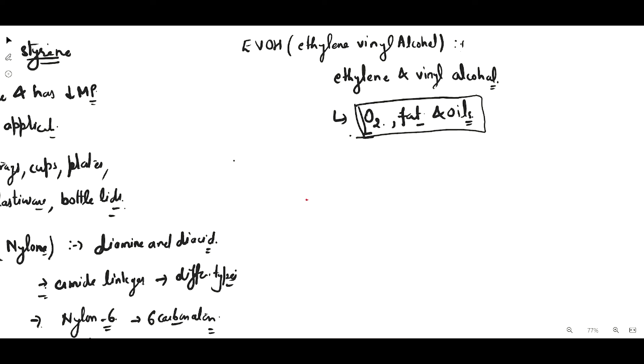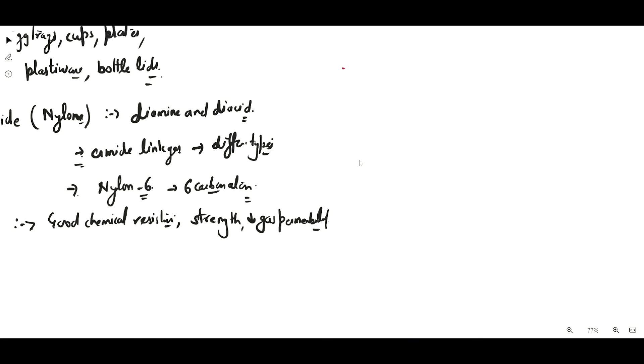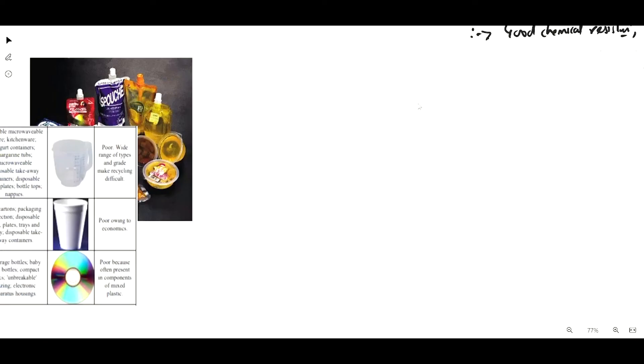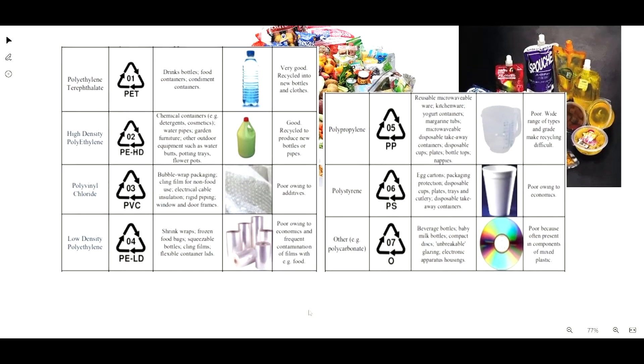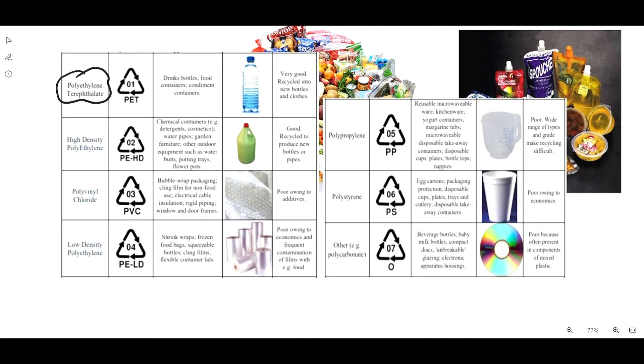Now let's discuss the common plastic materials used in the food industry. First is polyethylene terephthalate (PET). These plastics are recyclable, which means they can be used again. PET is designated by code 01 and is used in drinking bottles, food containers, and condiment containers.